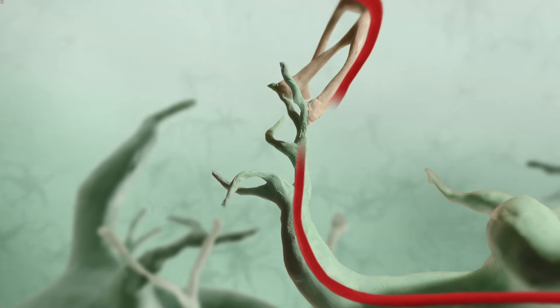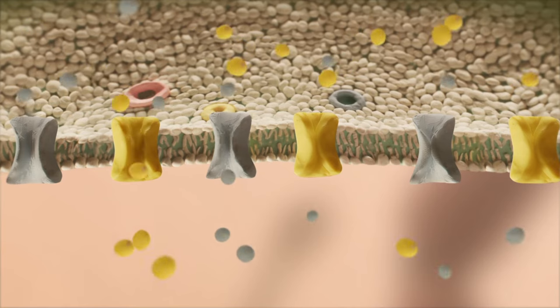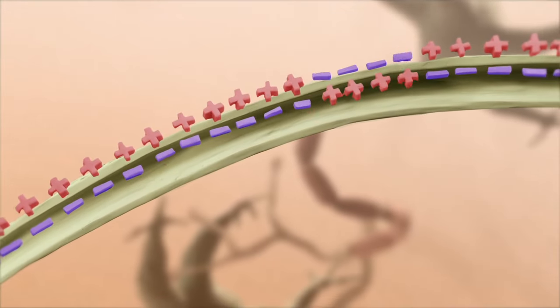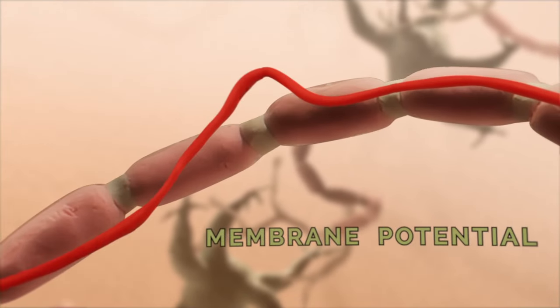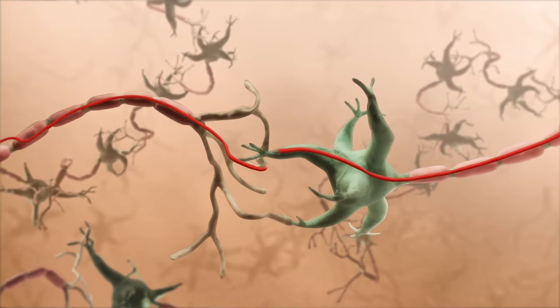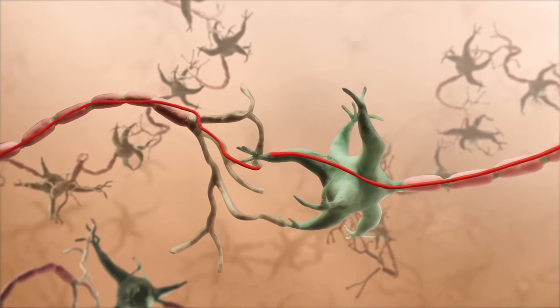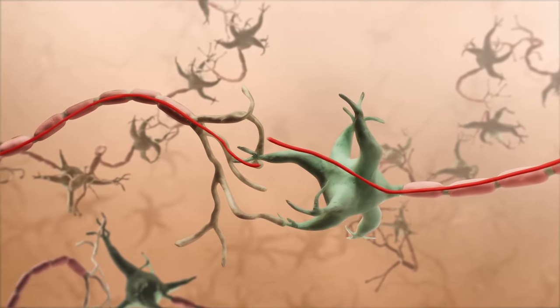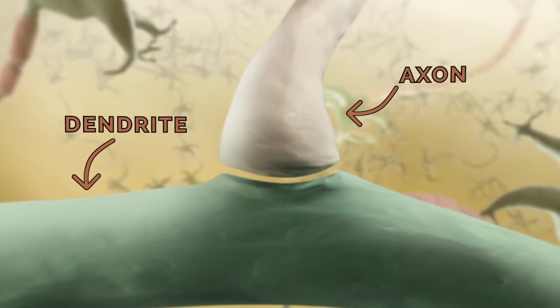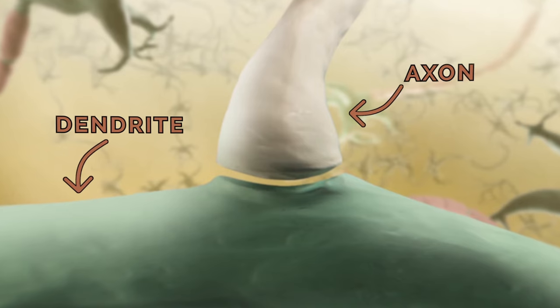A signal received by a dendrite is passed to the cell body. If there is sufficient depolarization of the cell body membrane to initiate an action potential, then an action potential is sent down the axon. The axon then carries the propagating action potential to another neuron. So what actually happens at the boundary between two neurons, between the axon of one neuron and the dendrite of another?